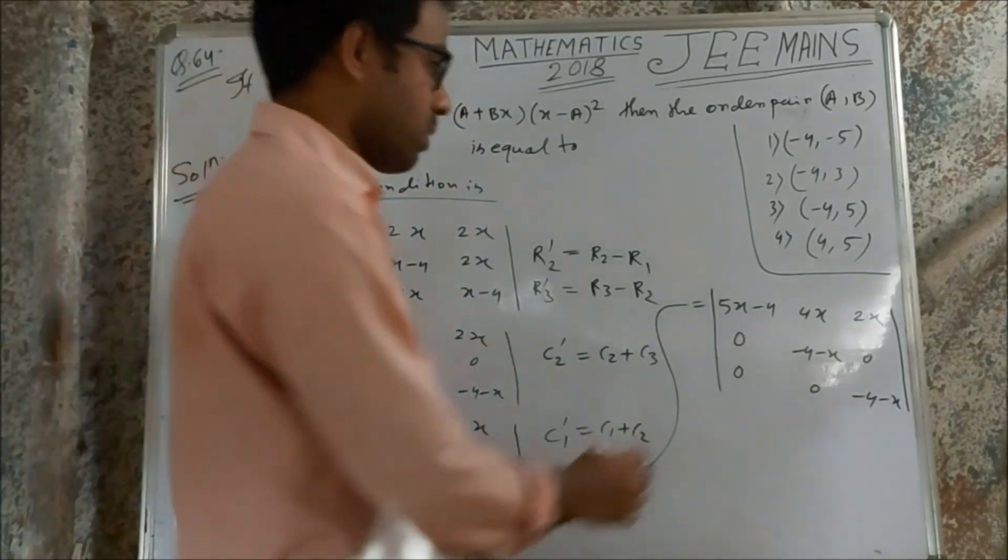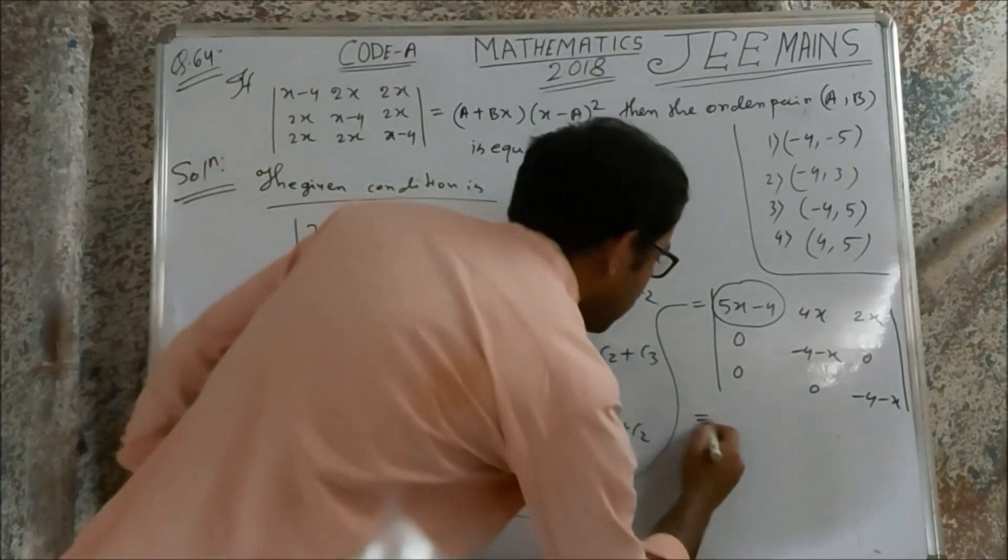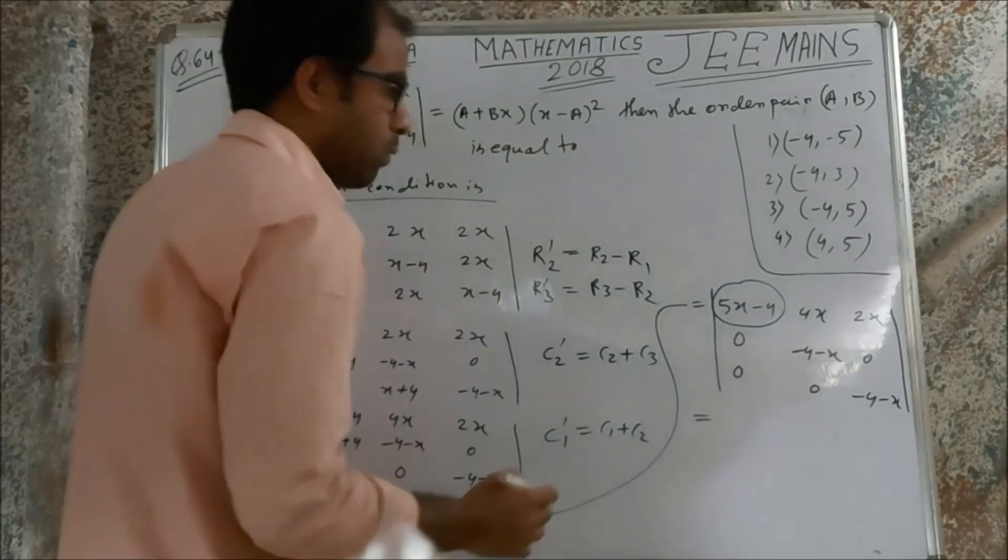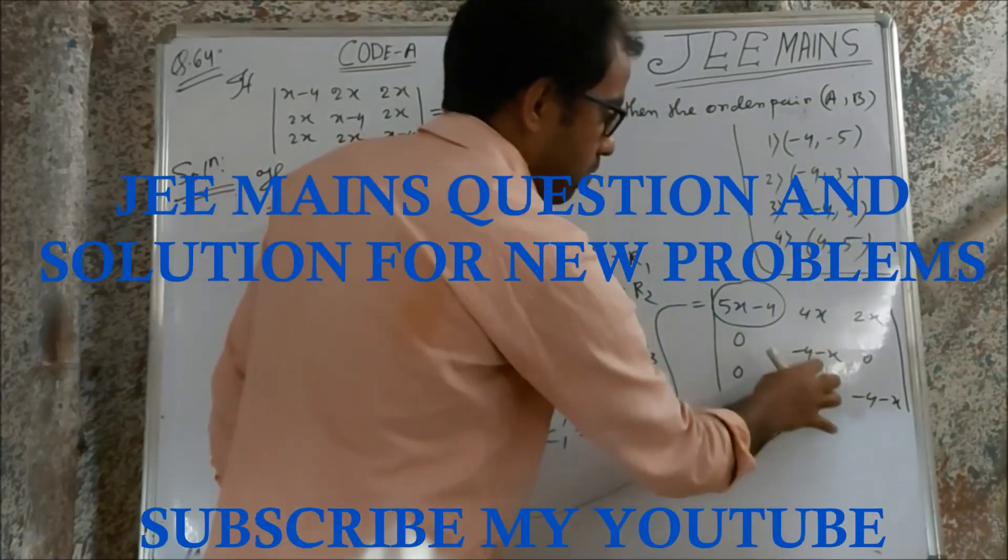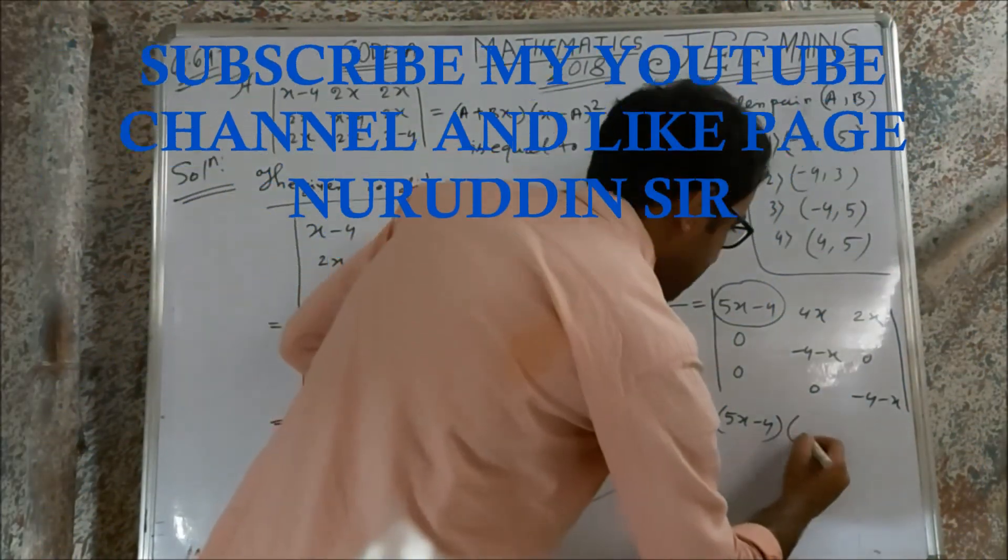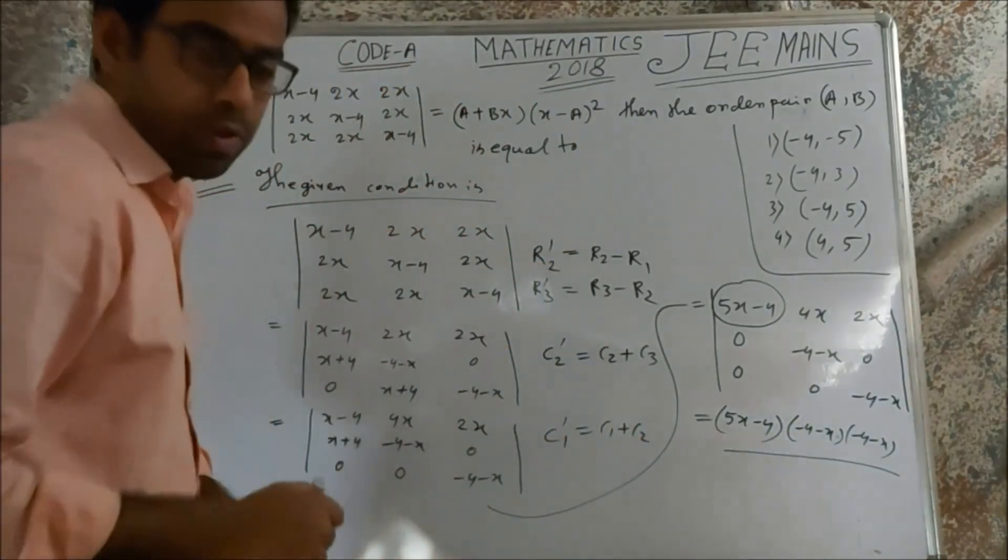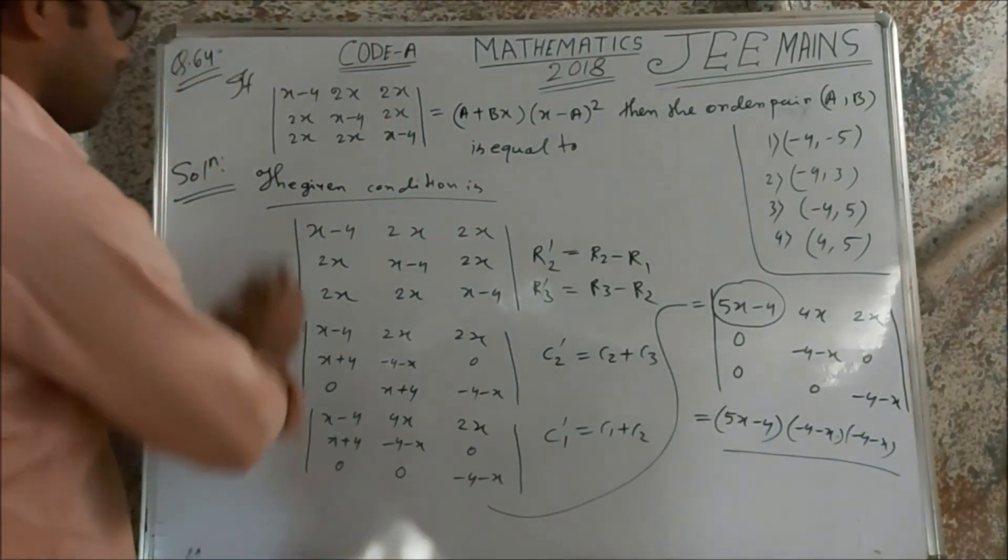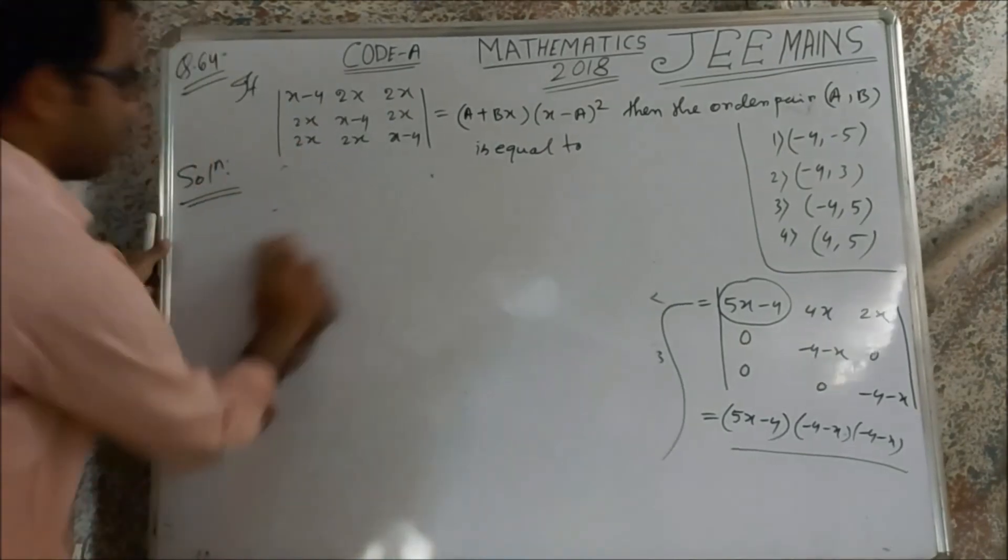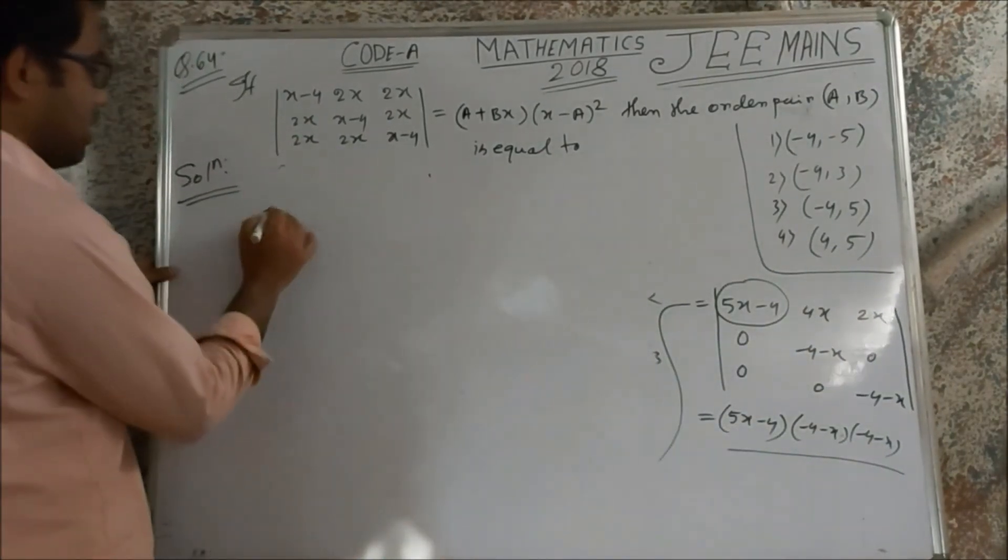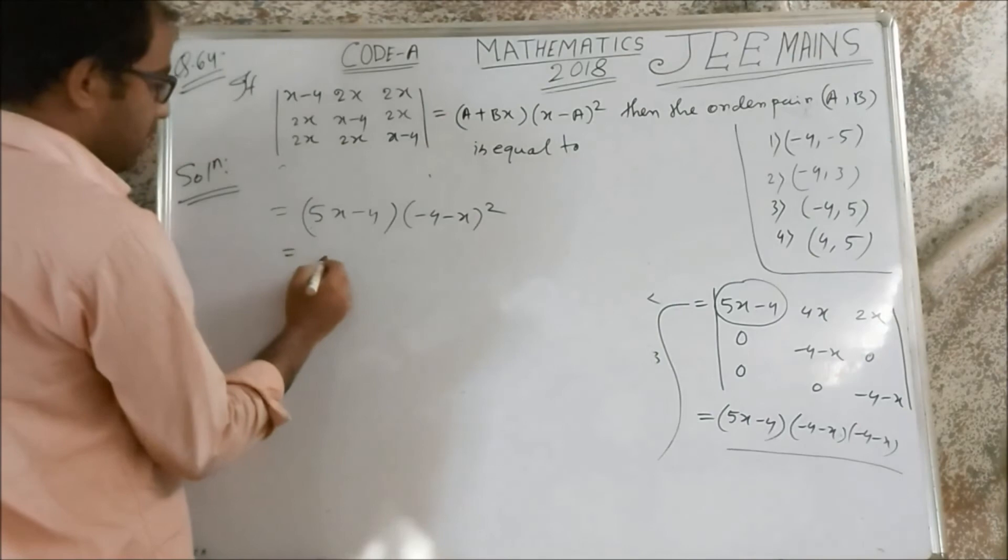Now we are expanding this determinant. Now we are expanding along the first column. So 5x minus 4 into x plus 4 into minus 4 minus x.